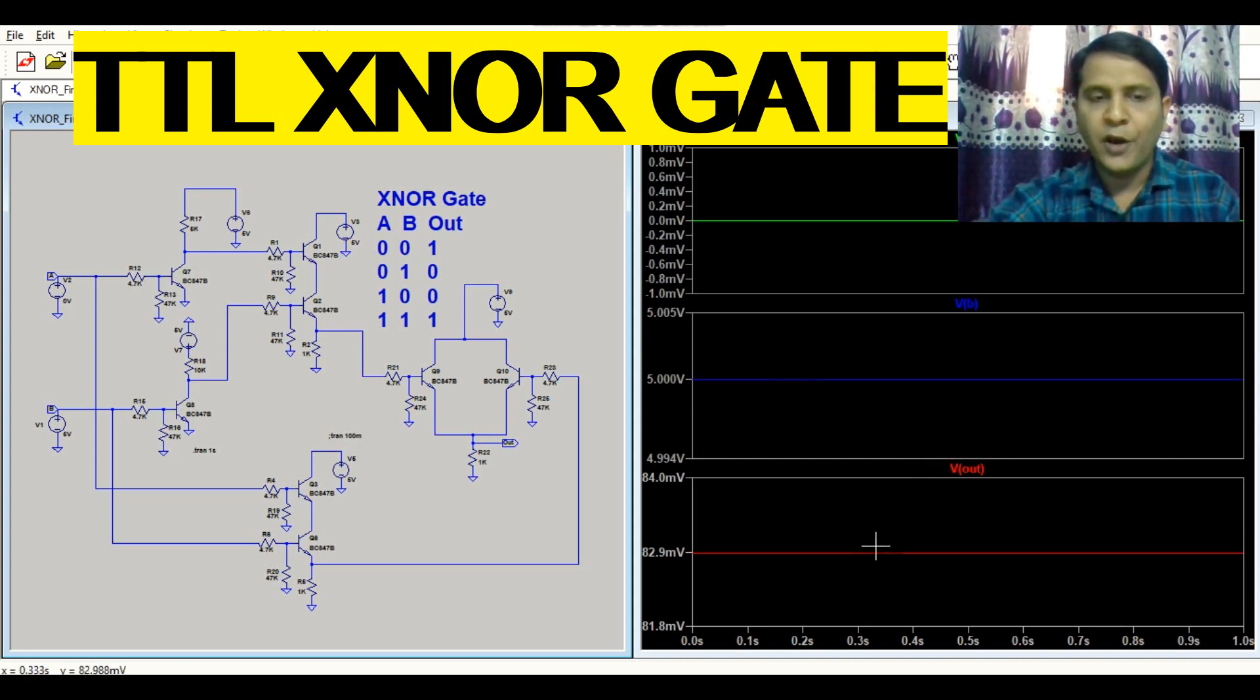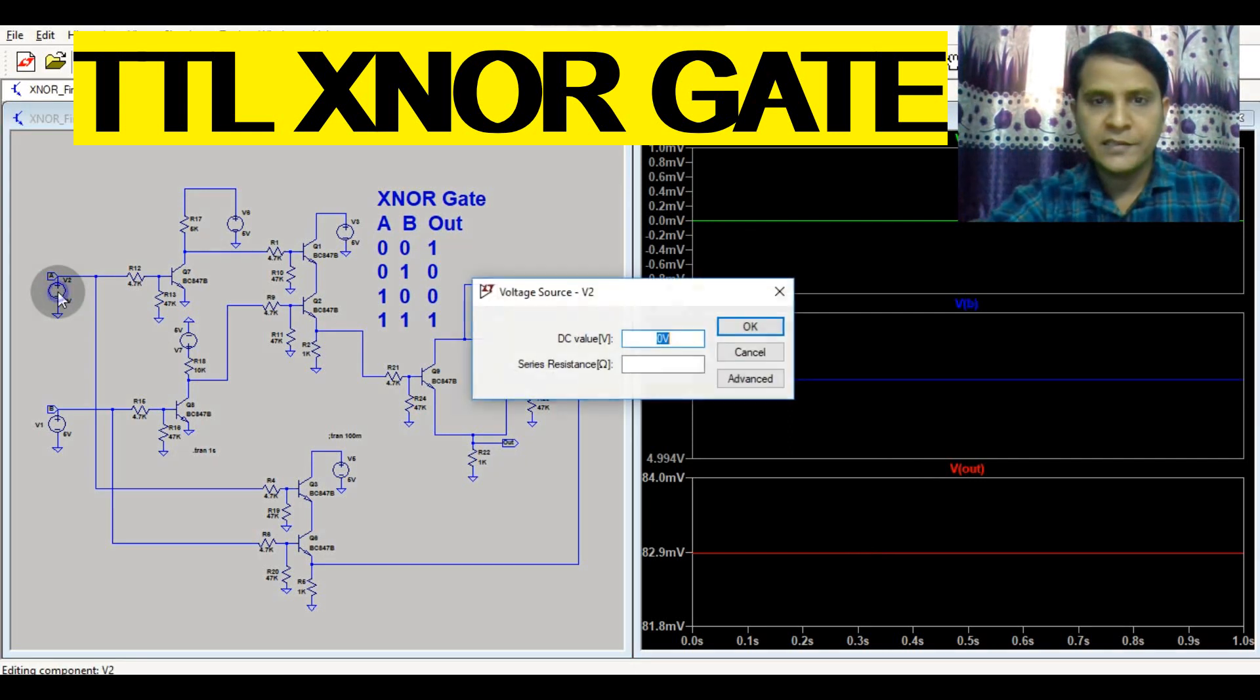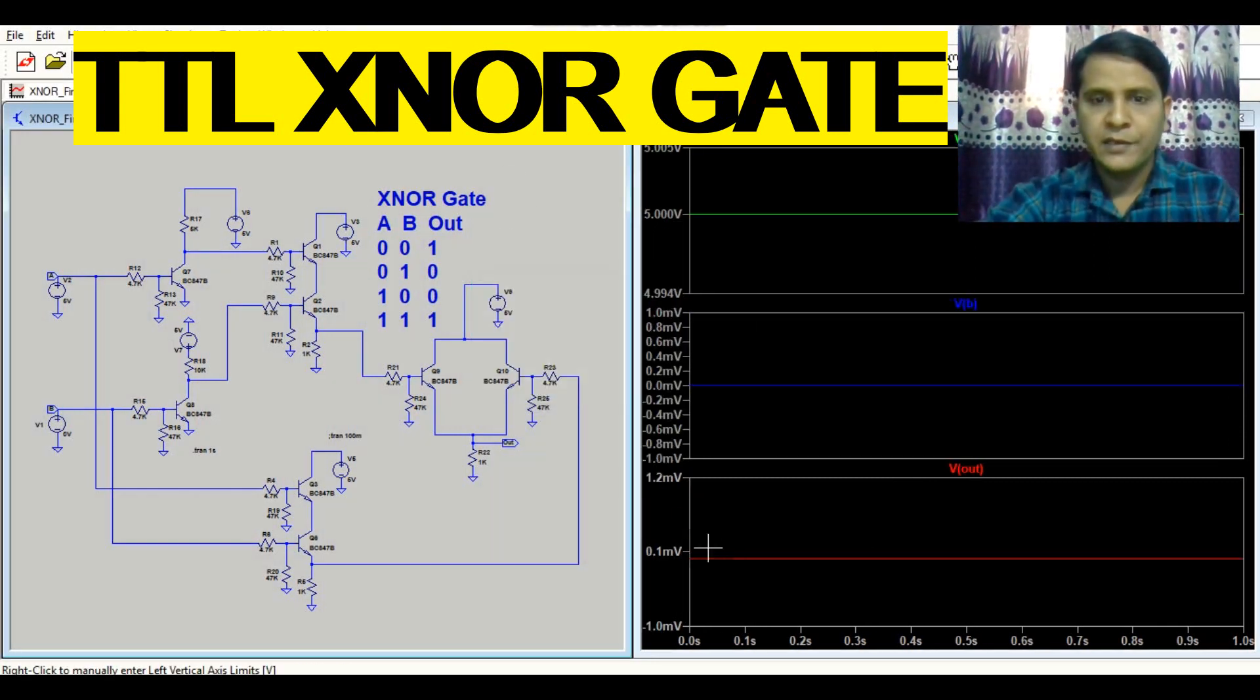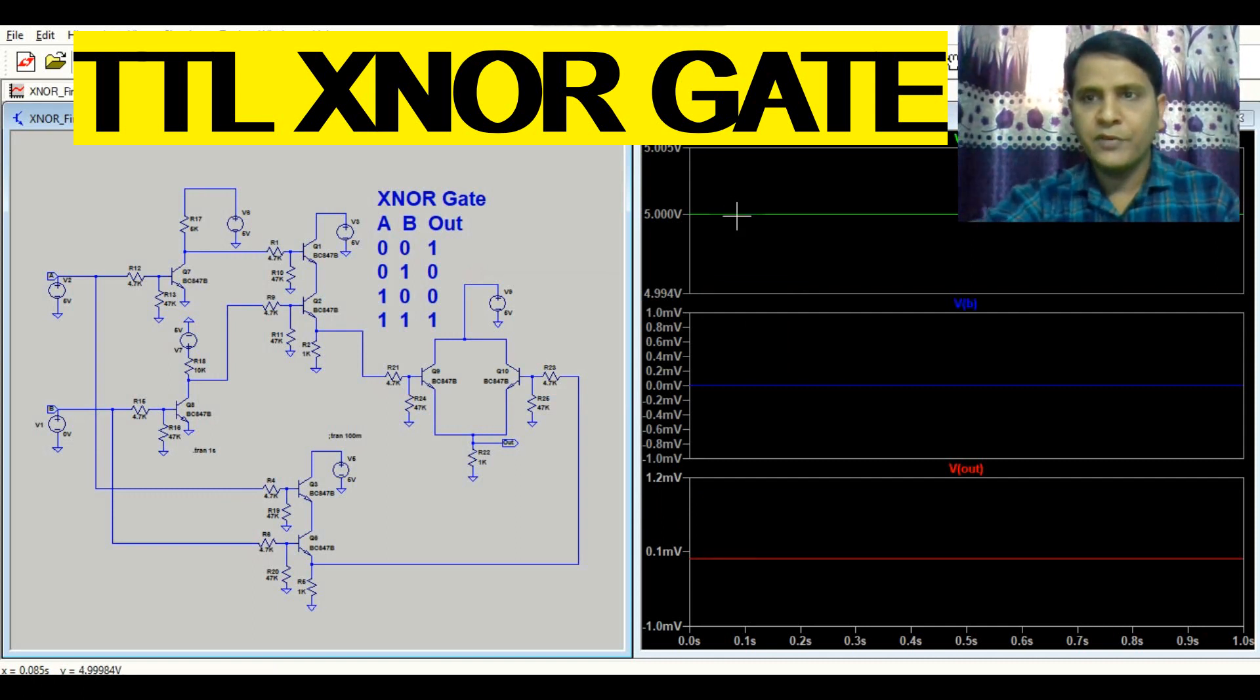Now let us understand the third case: V equals 5 volt, V equals 0 volt. So your output is 0 volt. V equals 5 volt, V equals 0 volt, and now your output is here 0 volt.